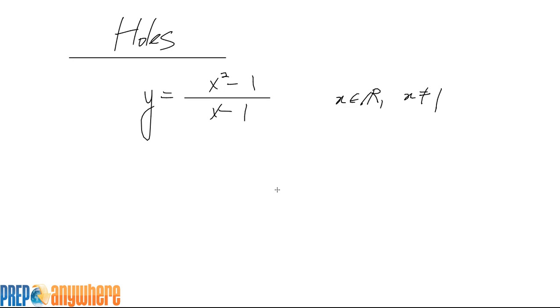Typically when we're drawing rational functions, x equals 1 will be a vertical asymptote, right? However, here the numerator shares a factor with the bottom.